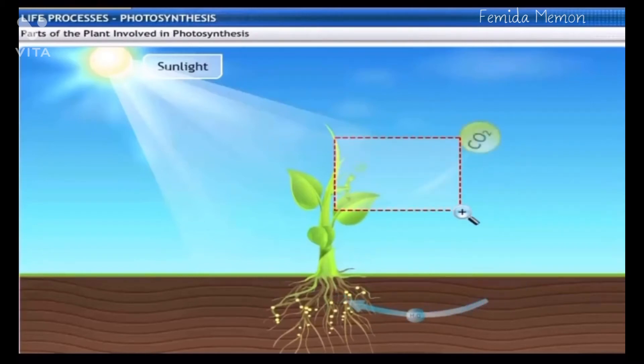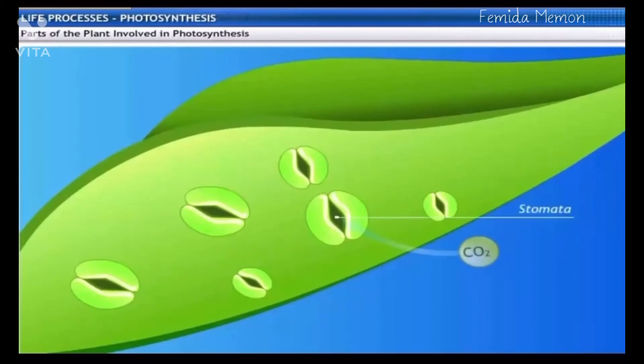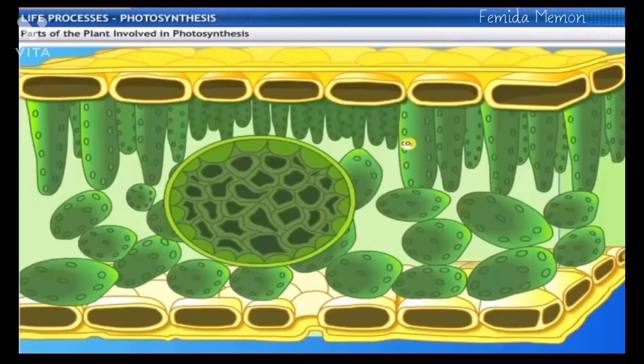Leaves have tiny pores on their surface called stomata. Stomata let in the carbon dioxide from the atmosphere. The carbon dioxide then diffuses into the cell organelles called chloroplasts, which carry out photosynthesis.